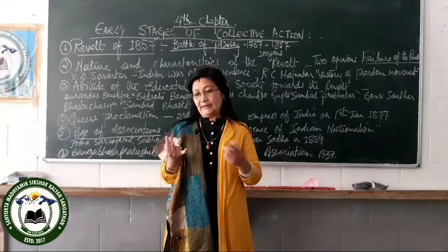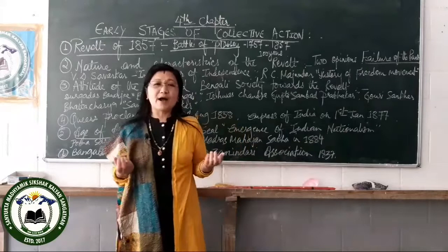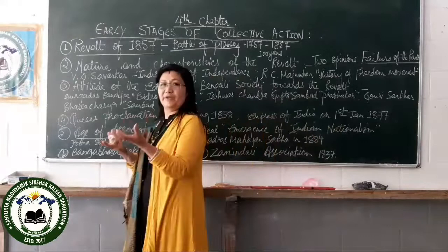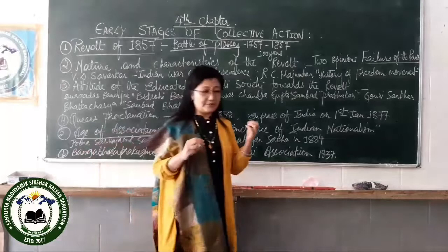Another reason is that the leaders were leaders only in their particular local area — for instance, Rani Lakshmi Bai was the leader only in Jhansi, and Kaur Singh was the leader only in Bihar. They were not leaders of the whole of India. That is why the revolt failed. Another reason is that there was no political ideal — no clear idea of what sort of government they would establish after removing the British.